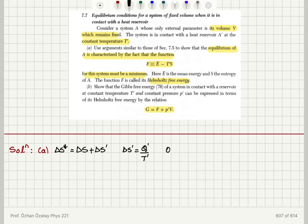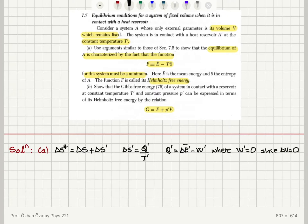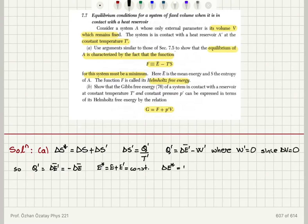The heat absorbed by the prime system is the change in its mean internal energy minus the work done on the prime system. The work done on the prime system equals zero since we have a constant volume, delta V equals zero. Therefore Q' equals delta E'_bar, which is also minus delta E_bar, because E_star — which is E plus E' — is a constant since the total system is isolated, and delta E_star equals delta E plus delta E'.